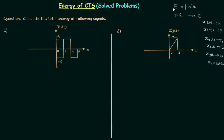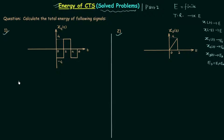Those are the three conclusions from the previous lecture. Now in this lecture, Part 2 of solved problems based on energy of continuous time signals, we will solve two questions conventionally. We can use the properties of energy and power signals for multiple choice questions, but for university exams you must follow the conventional approach — using the formula and calculating the energy from minus infinity to infinity.